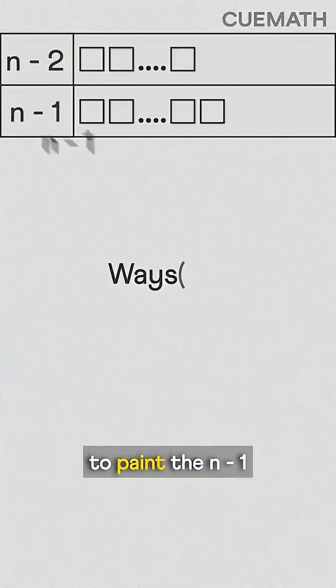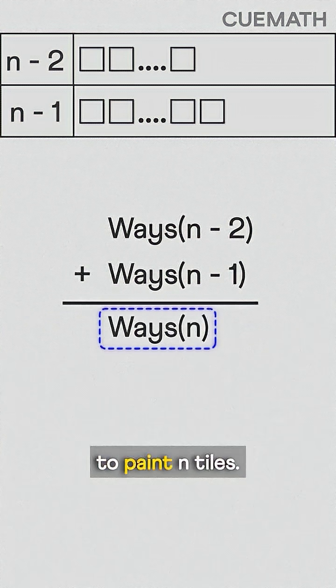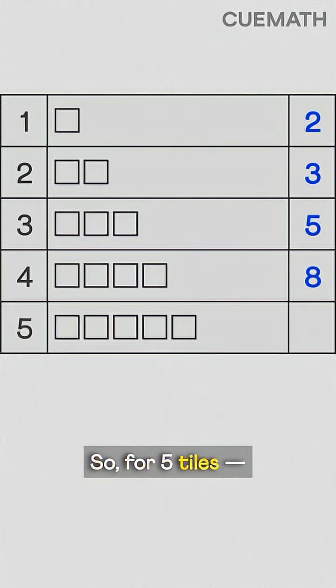So by adding the ways to paint the n minus one and n minus two tiles, we get the ways to paint n tiles.